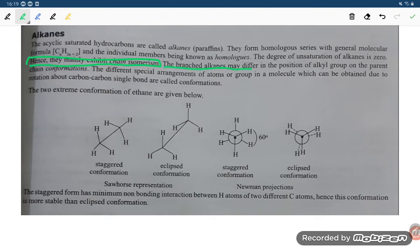The branched alkanes may differ in the position of alkyl group on the parent chain conformation. The different spatial arrangement of the atom or groups in a molecule which can be obtained due to rotation about the carbon-carbon single bond are called the conformation.